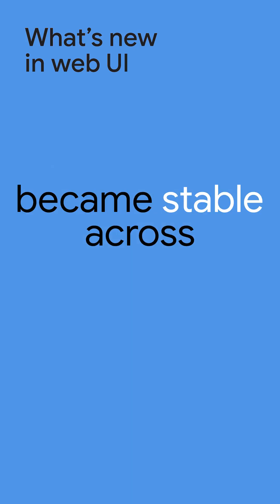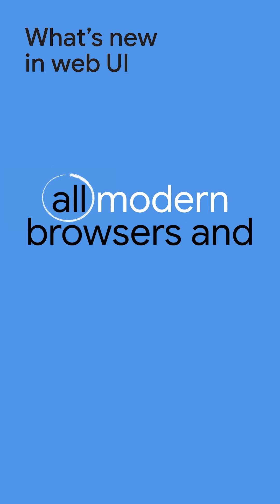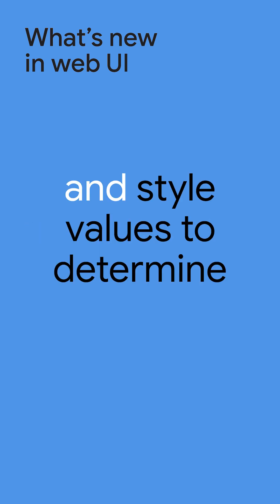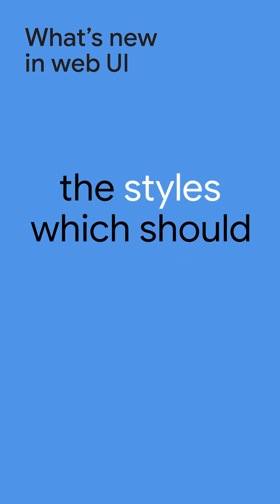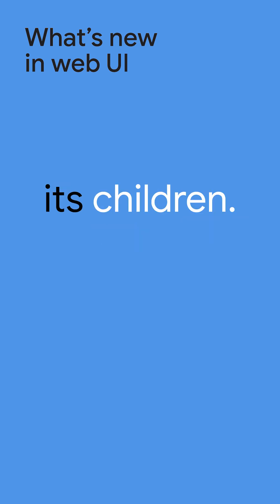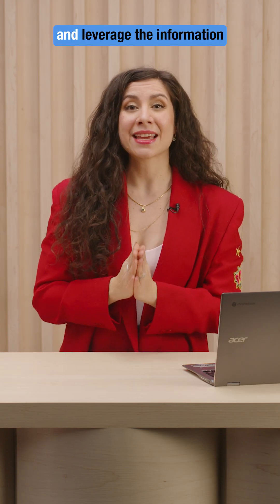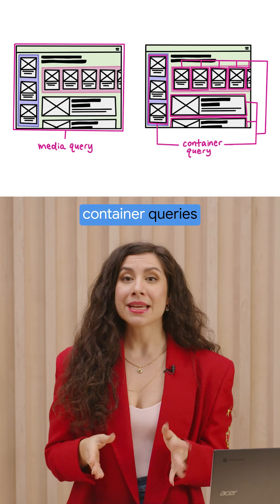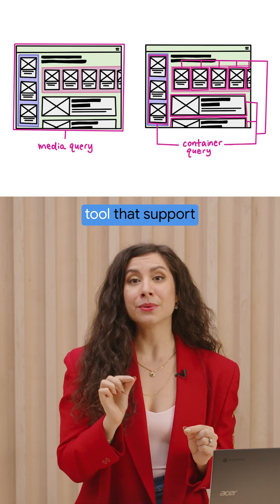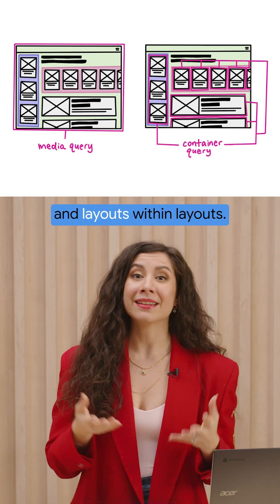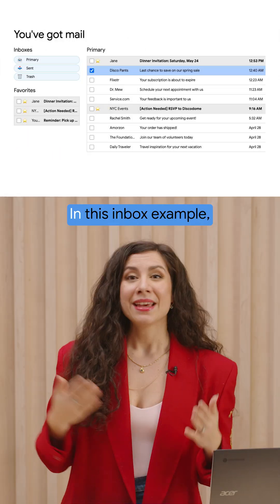Container queries recently became stable across all modern browsers and allow you to query a parent element's size and style values to determine the styles which should be applied to any of its children. Unlike media queries, which can only access and leverage information from the viewport and thus really only work on a page layout macro view, container queries are a more fine-tuned tool that supports any number of style optimizations and layouts within layouts.